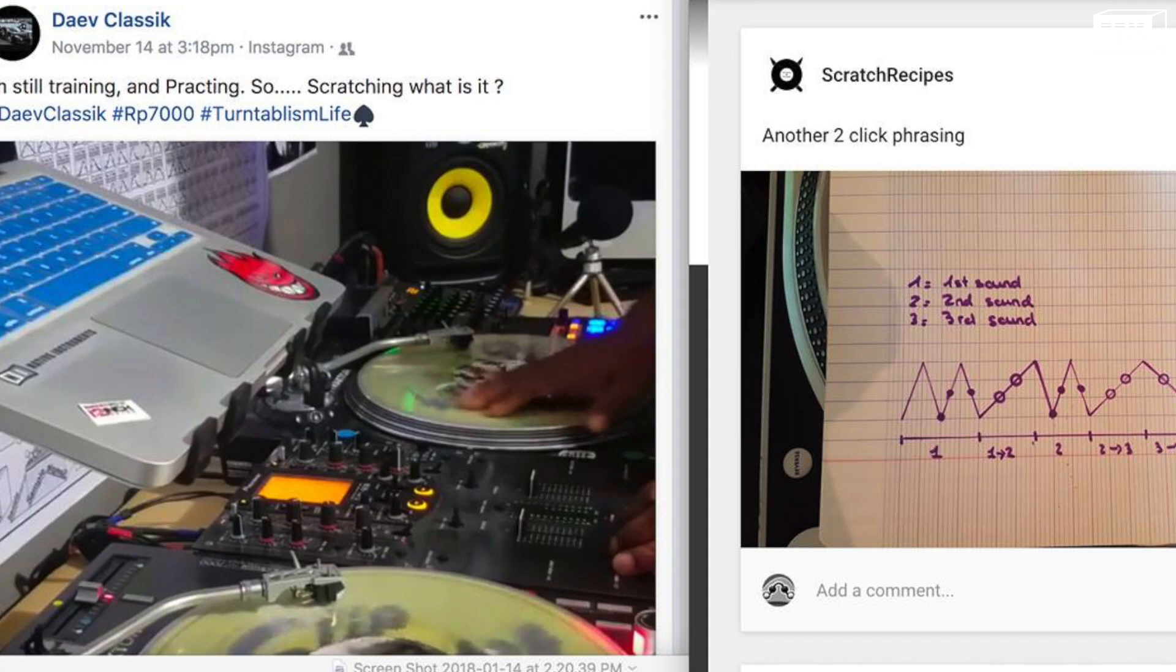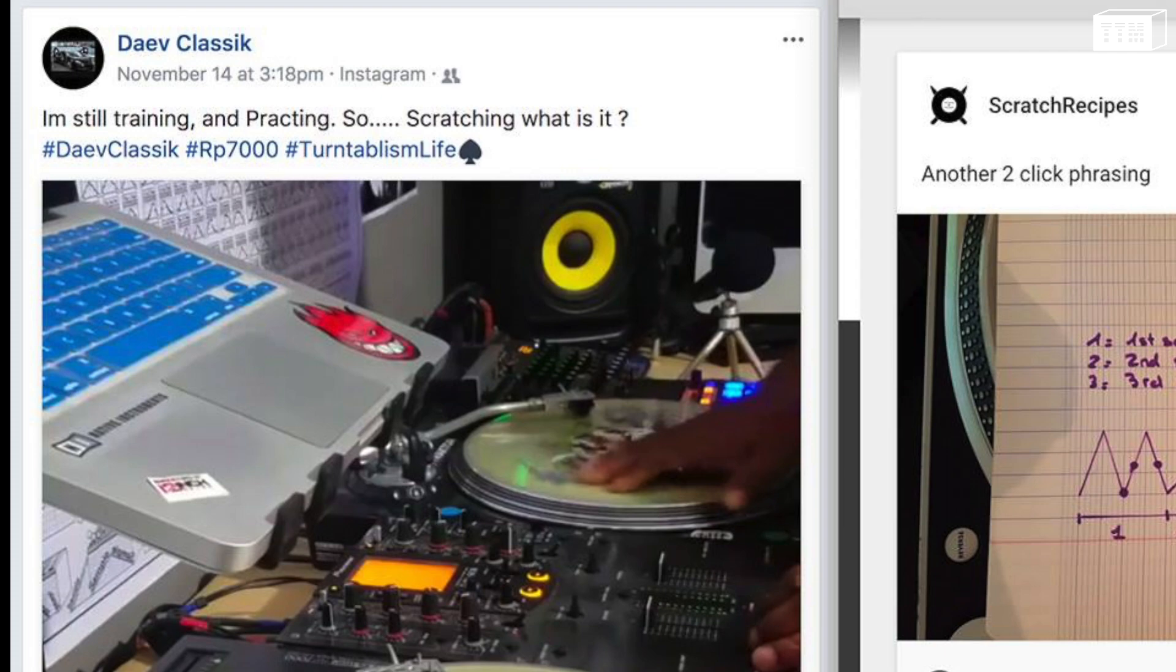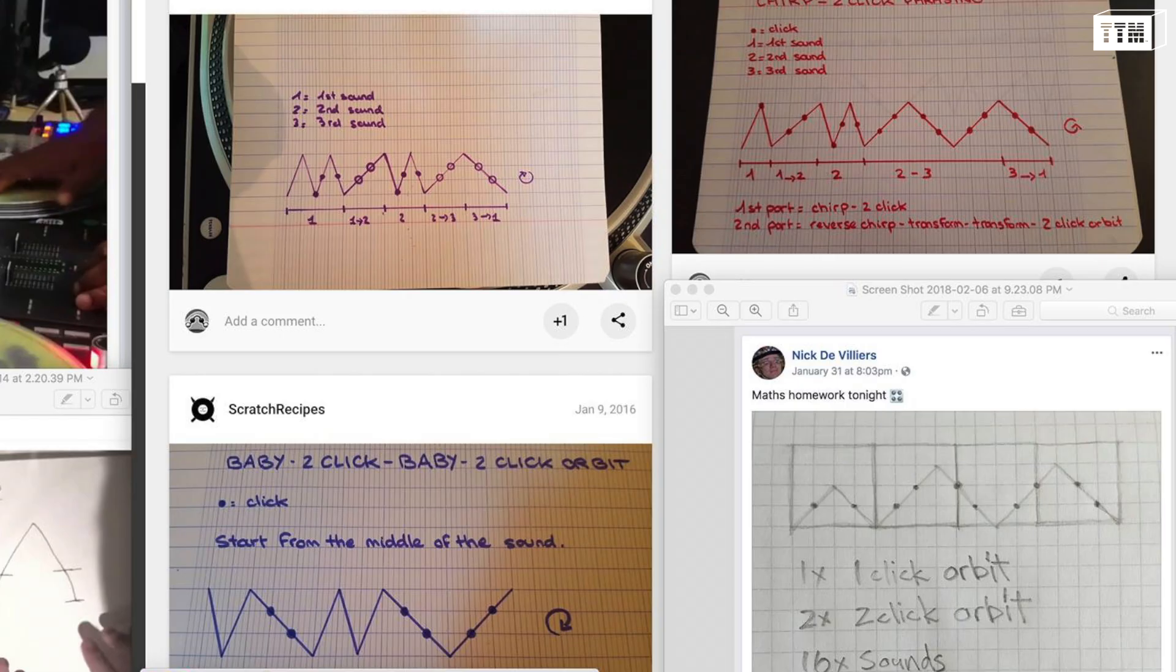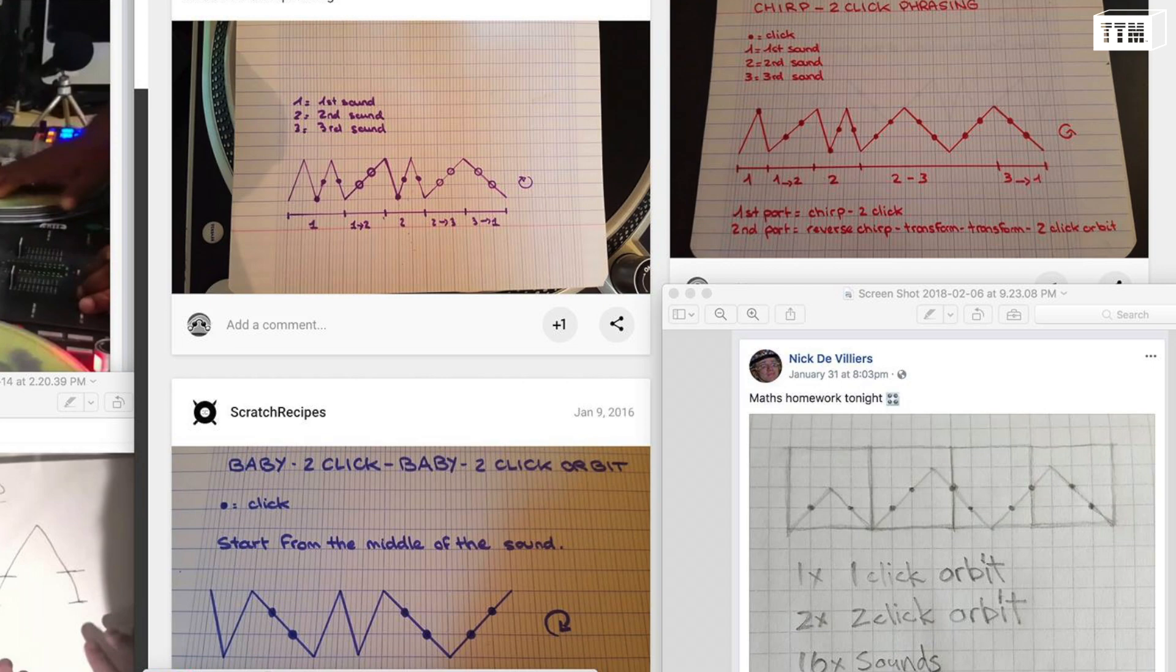In the upper left hand corner is a picture of a dope American juggler and scratcher called Dave Collins Classic with a periodic matrix of scratches poster in his studio.